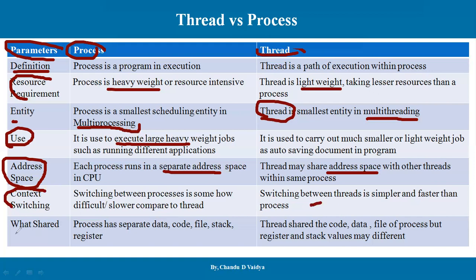Regarding what is shared: in a process, each process has separate data section, code section, file section, stack section, and register section — all separate. Whereas threads share the data, code, and files of the parent process, but the register and stack values may be different for each thread.